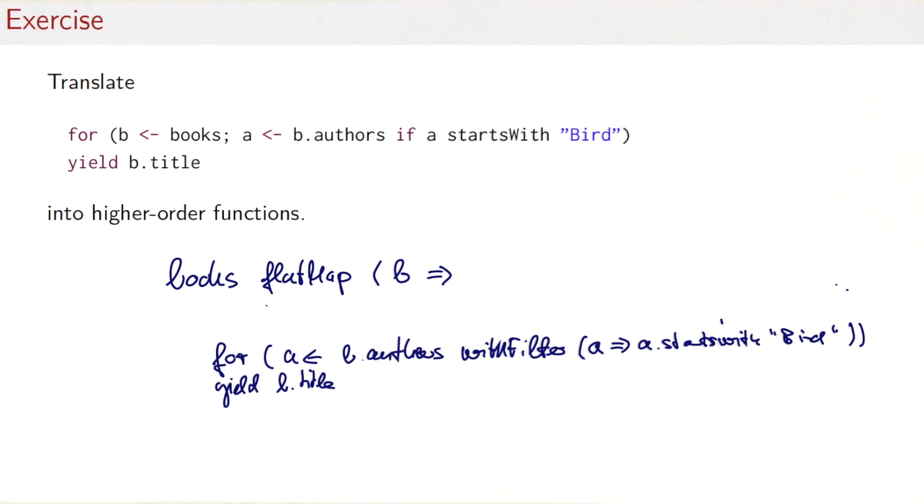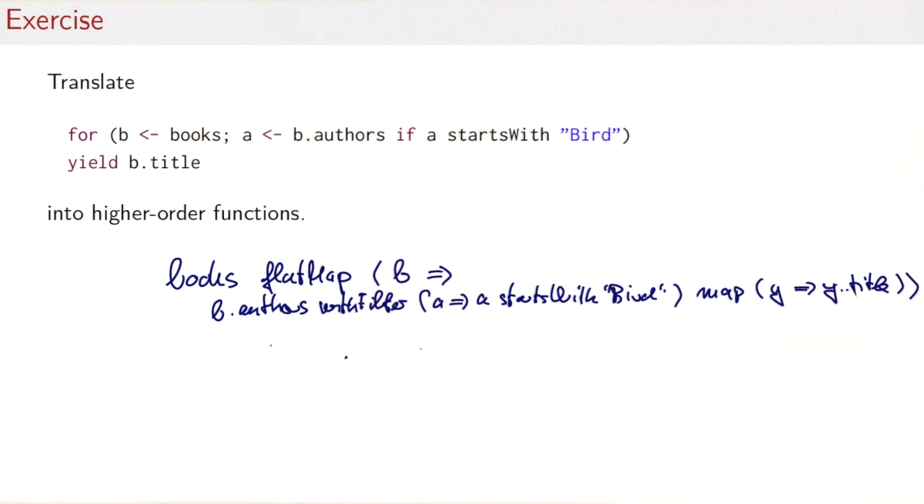And we yield b.title. So we still have a for expression to translate. This one here now has a single generator. So it would translate to a map. So let's do that. So we take the generator, that would be b.authors withFilter a a startsWith Bird, and now we take this one here and map it with the function that takes an a and returns a.title. So that's the end result. It's a flatMap followed by a map of a generator that contains a withFilter.